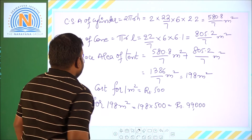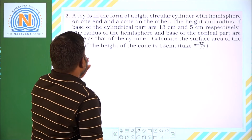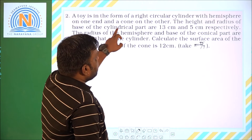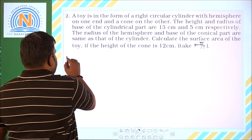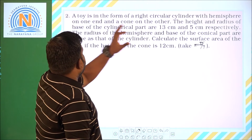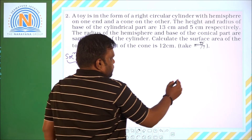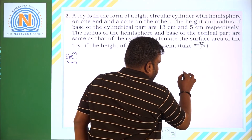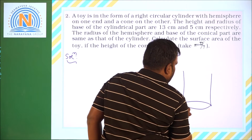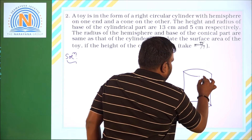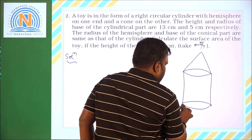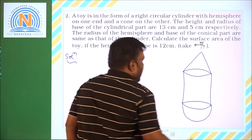Now coming to the second question. A toy is in the form of a right circular cylinder with a hemisphere on one end and a cone on the other end. Let us draw the figure: this is the cylindrical part, on one end we have a cone and on the other end we have a hemisphere.